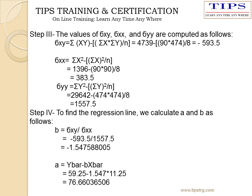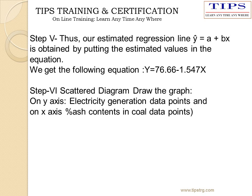Step 3, use the formulas for sigma xy, sigma xx, and sigma yy. Step 4, by putting the calculated values into the formulas for A and B, we get B equal to minus 1.547 and A equal to 76.66. Step 5, by putting these values into the equation y equals A plus Bx, we get the regression equation: y equals 76.66 minus 1.547x.